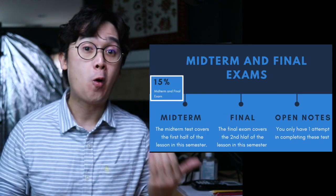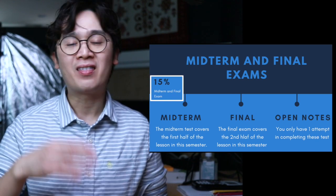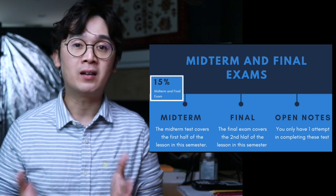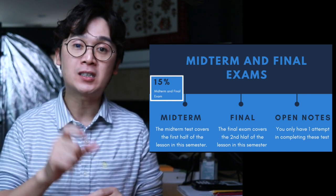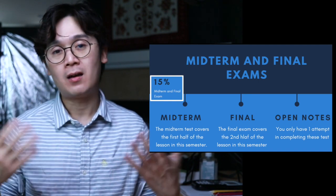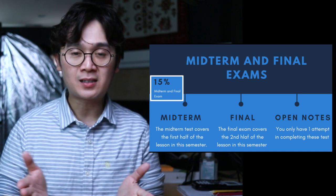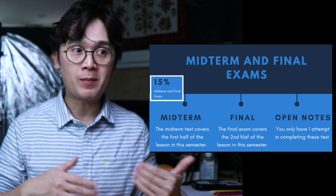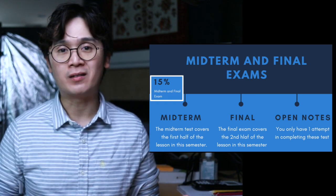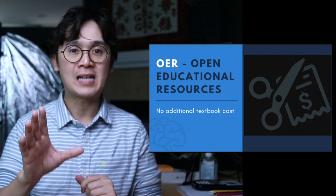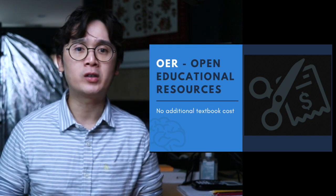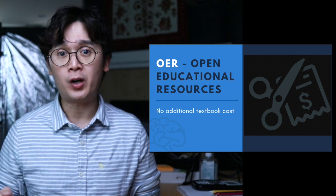For your midterm and your final exam, take note that each has a single attempt — you cannot repeat the test. You have the entire week to answer your midterm and your final exam, so make sure that you are prepared when you take them. That is 15% of your final grade.